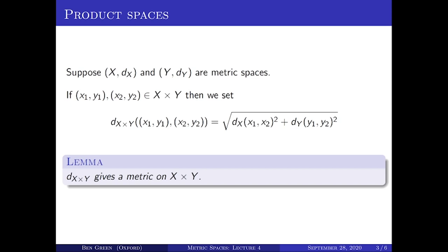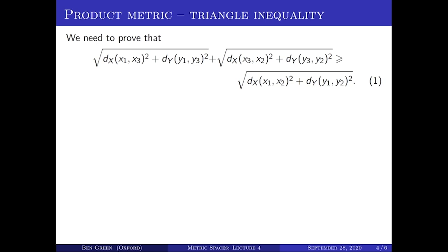I'll leave the positivity and symmetry properties as easy exercises. The real heart of the matter is the triangle inequality. We need to prove that for any choice of x1, x2, x3 and y1, y2, y3, the square root of the X-distance between x1 and x3 squared plus the Y-distance between y1 and y3 squared, plus the square root of the X-distance between x3 and x2 squared plus the Y-distance between y2 and y3 squared, is at least the square root of the X-distance between x1 and x2 squared plus the Y-distance between y1 and y2 squared.